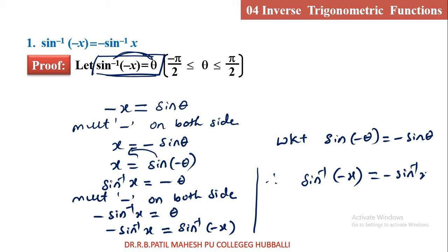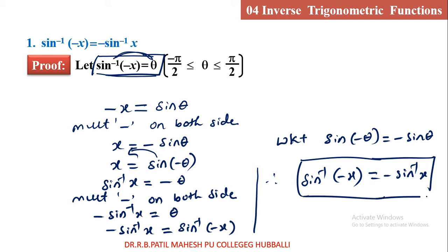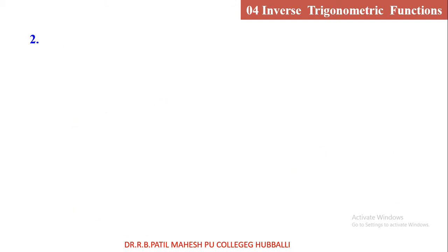Always remember this property with negative values: sin inverse of minus x is minus sin inverse x. Let us move to the next. Tan inverse of minus x equal to minus tan inverse x. The proof of this one.